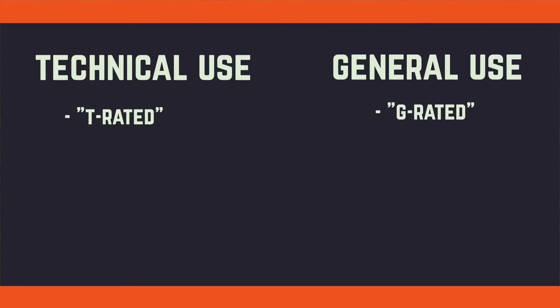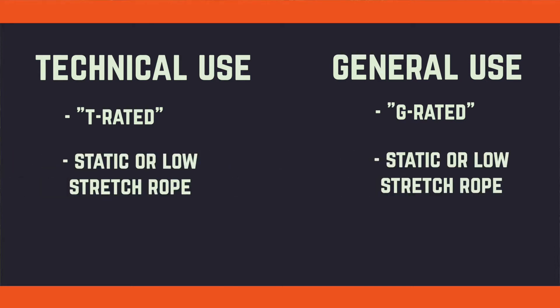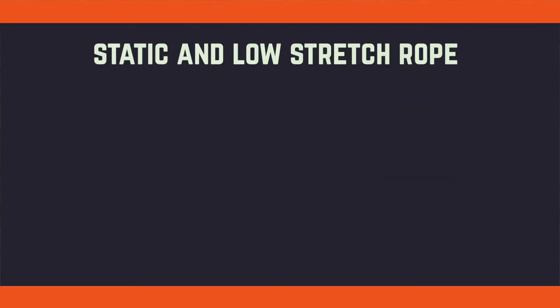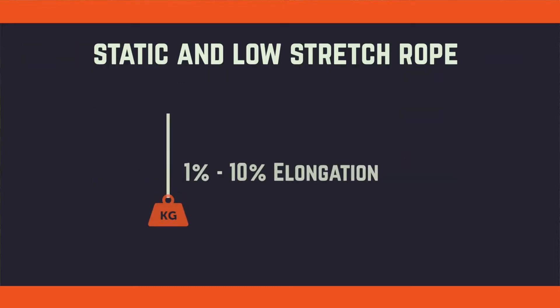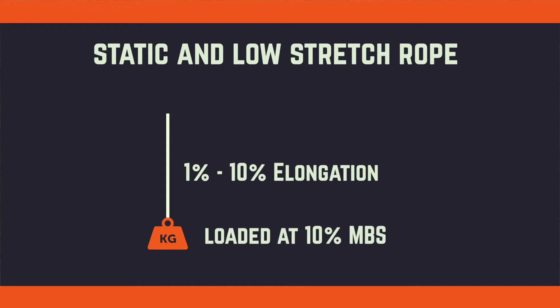Both general use and technical use life safety ropes will likely be either static or low stretch ropes. That means they have at most 10% elongation when the rope is loaded to 10% of its minimum breaking strength.